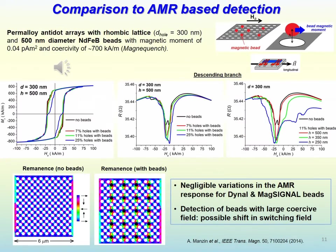Finally, we have investigated if the antidot arrays can also be used as anisotropic magnetoresistance sensing elements. To this aim, we focus attention on permalloy antidot arrays with rhombic lattice. In the presence of beads like the ones considered in the previous analysis, there are negligible variations in the anisotropic magnetoresistance response, since these beads have a practically null magnetization at remanence.